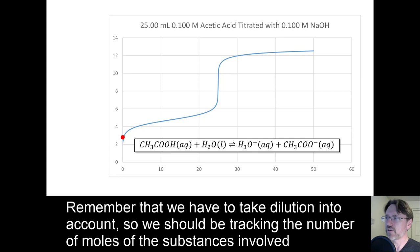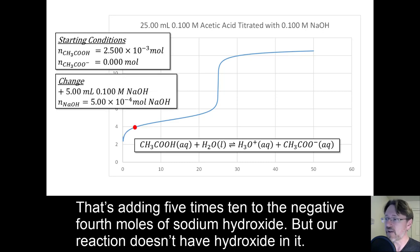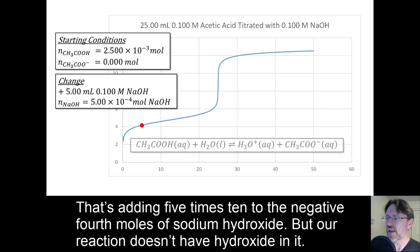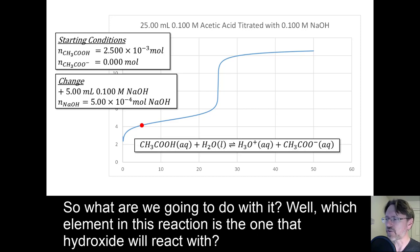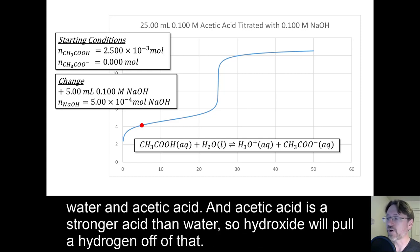Remember that we have to take dilution into account, so we should be tracking the number of moles of the substances involved rather than the concentrations. Let's start by looking at what happens when we add 5 milliliters of our base. That's adding 5 times 10 to the negative 4th moles of sodium hydroxide. But our reaction doesn't have sodium hydroxide in it. So what are we going to do with it? Which element in the reaction is the one that the hydroxide will react with? Remember, we are leaving our hydronium ion concentration at zero for our shifted initial conditions. So there are really only two choices, water and acetic acid.